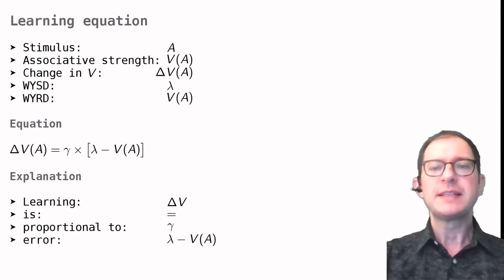As I mentioned earlier, the symbols pretty much translate the sentence learning is proportional to error. Learning is delta V, how much the associative strength changes. This is what RW would like to calculate.